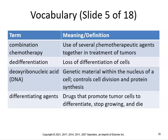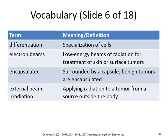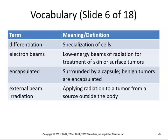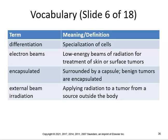Cellular oncogenes are pieces of DNA activated by mutations or dislocation that can cause a normal cell to become malignant. Chemotherapy is treatment with drugs. DNA is genetic material within the nucleus of a cell that controls cell division and protein synthesis — we have 46 chromosomes, 23 from each parent. Differentiating agents are drugs that promote tumor cells to differentiate, stop growing, and die. Differentiation is the specialization of cells. Electron beams are low-energy beams of radiation for treatment of skin or surface tumors.